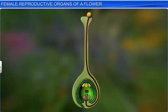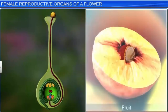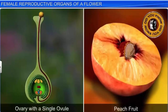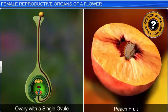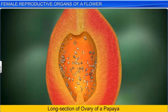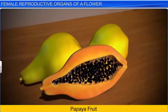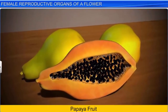Moreover, after fertilization, the ovules form seeds, while the ovary develops into a fruit. Different flowers of different plant species have a varying number of ovules in their ovaries. A peach, for instance, develops from an ovary containing a solitary ovule. A papaya, on the other hand, has several ovules in its ovary, and that's why you see numerous seeds in the fruit when it is split open.